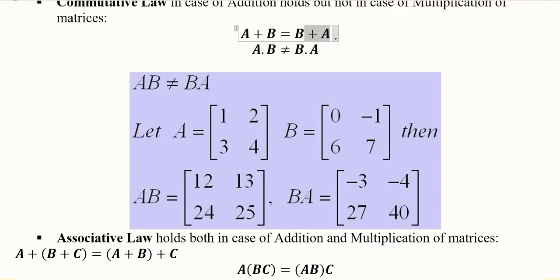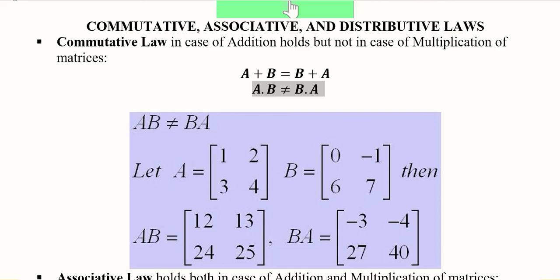We can verify this: matrix a and matrix b are given. You can pause the video and calculate the product a·b and then b·a. The products are not the same, confirming that the commutative property does not hold for matrix multiplication. However, if you add the two matrices, the answers will be the same, verifying commutativity for addition.